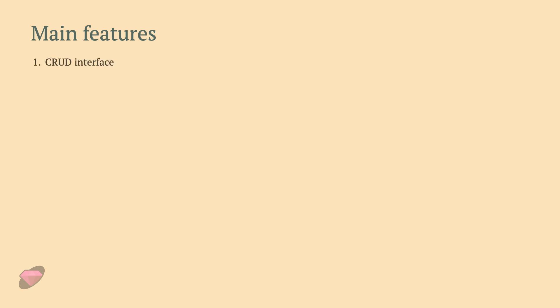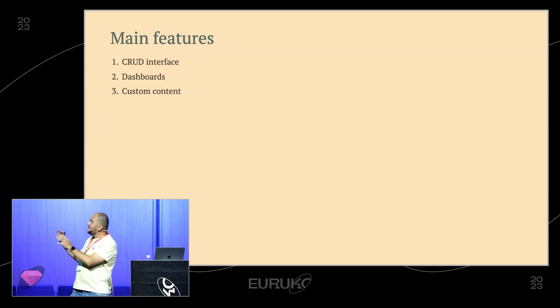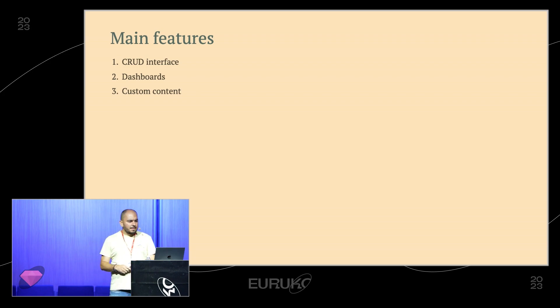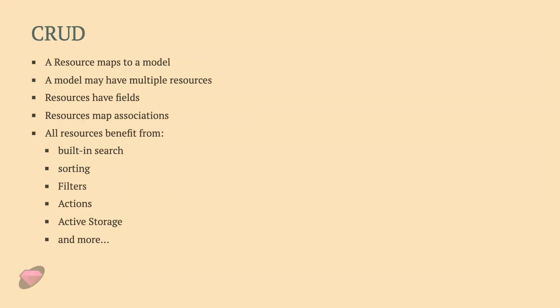Main features: I think about it as three main features — the CRUD interface, dashboards, and custom content. The CRUD interface has probably 70% of all the value. Custom content is an umbrella name for everything else you need to hook in when the DSL doesn't give you something out of the box. A resource maps to a model, a model can have multiple resources, resources have fields, and all resources benefit from built-in search, sorting, filters, actions, and Active Storage integration.